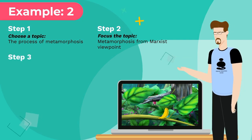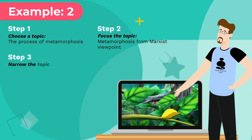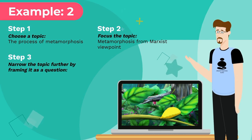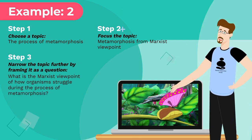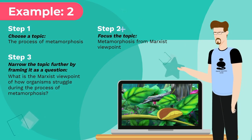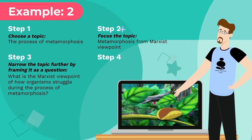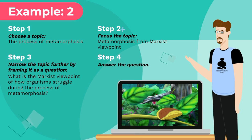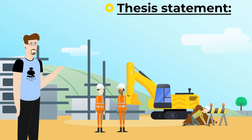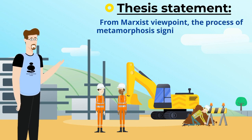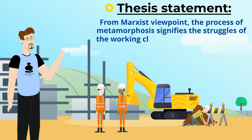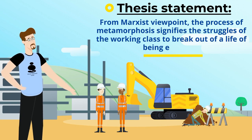Example two: Step one, choose a topic — the process of metamorphosis. Step two, focus the topic — metamorphosis from a Marxist viewpoint. Step three, narrow the topic further by framing it as a question: what is the Marxist viewpoint of how organisms struggle during the process of metamorphosis? Step four, answer the question. Thesis statement: from a Marxist viewpoint, the process of metamorphosis signifies the struggles of the working class to break out of a life of being exploited.